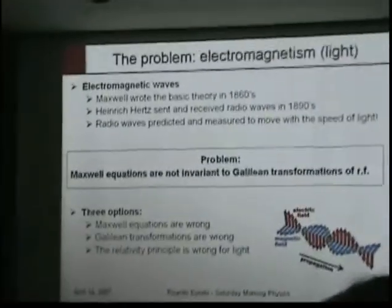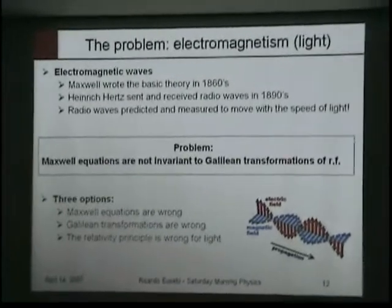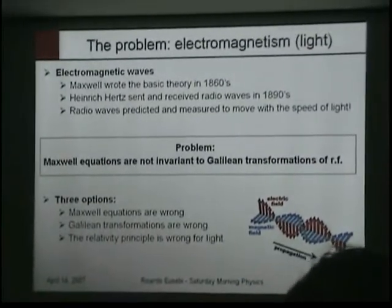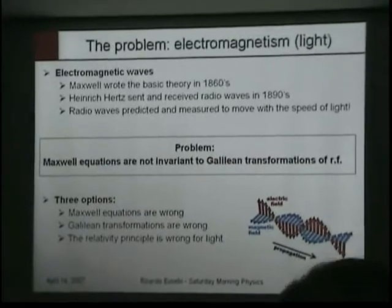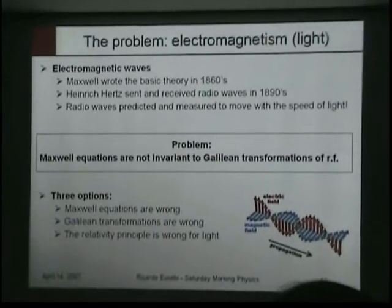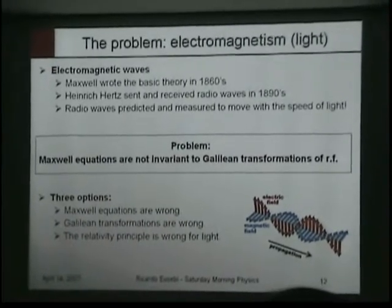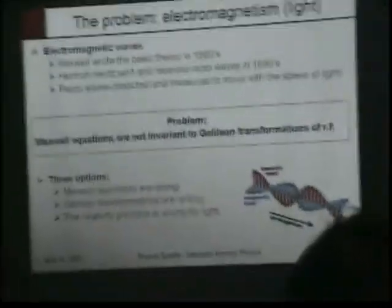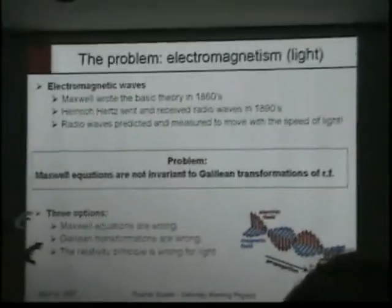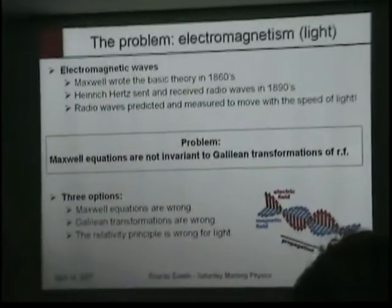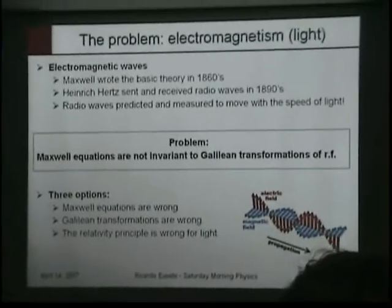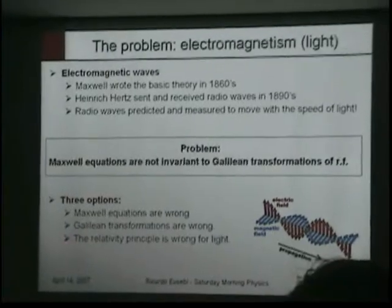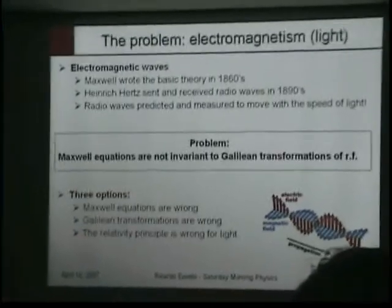So we have three options. First, Maxwell's equations are wrong — but hardly, since Maxwell predicted the velocity of light from things already measured. Second, the Galilean transformations are wrong — the same transformation that tells you if you throw a ball at 50 miles per hour in a train going 50 miles per hour, you see the ball at 100. Third, the relativity principle is wrong for light.